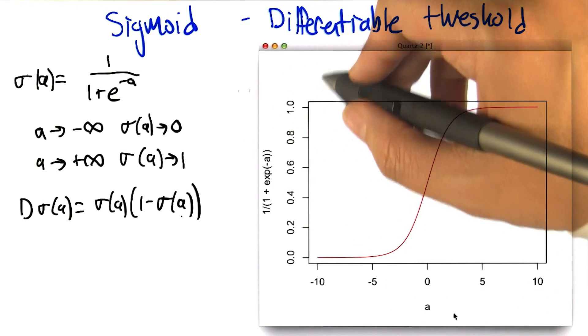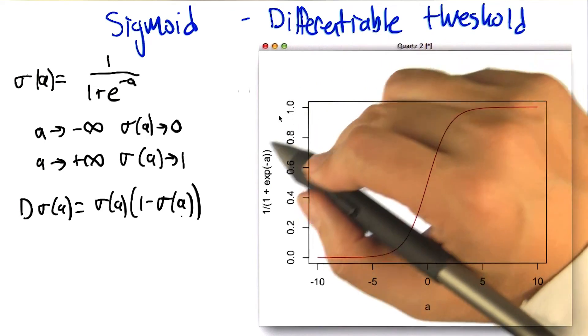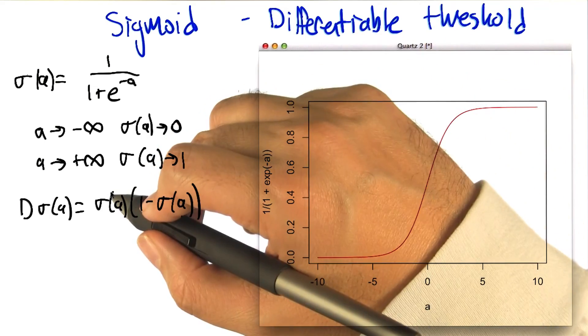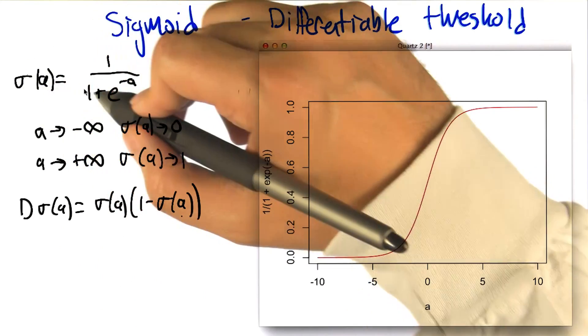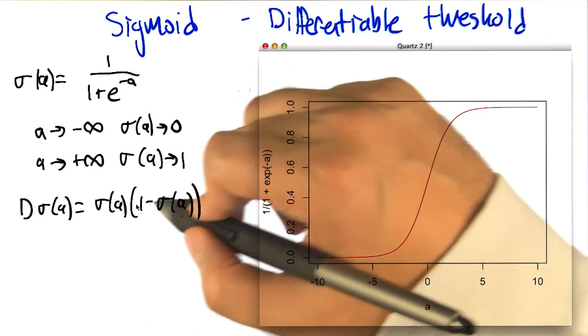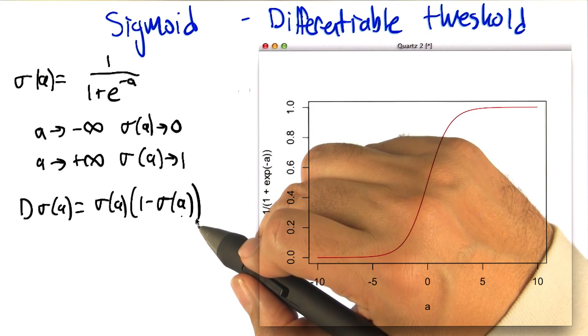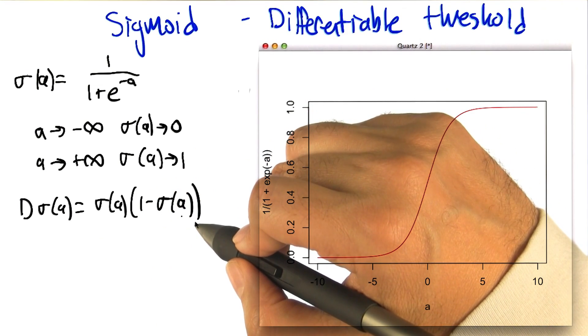So not only is this function differentiable, but the derivative itself has a very beautiful form. In particular, it turns out that if you take the derivative of this sigma function, it can be written as the function itself times one minus the function itself. So this is just really elegant and simple.